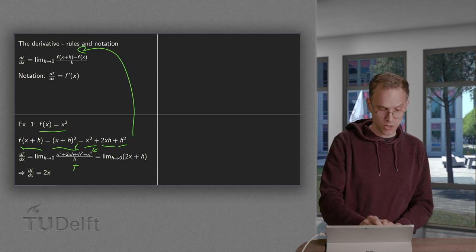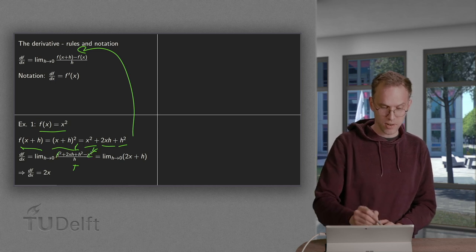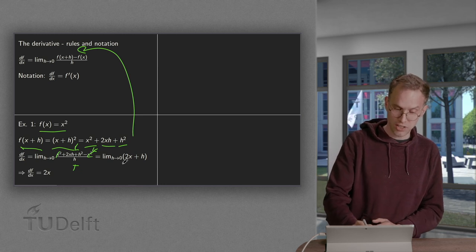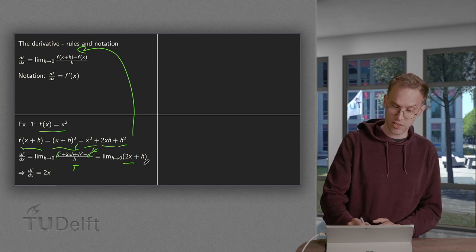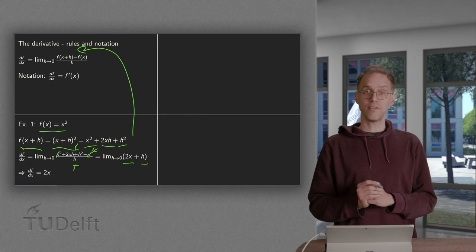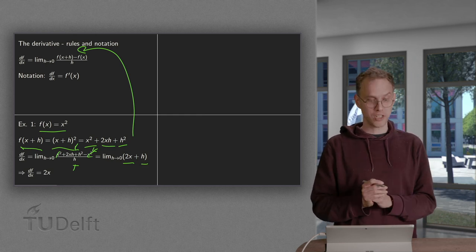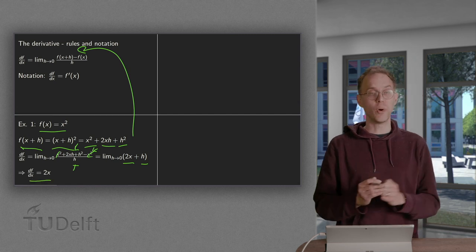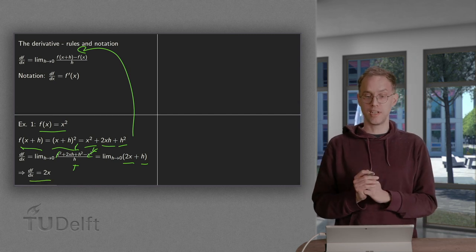And then you see that the x² terms cancel out. And the 2xh over h gives us a 2x. The h² over h gives us an h. And if we take h to 0 we get 2x. So in that case df/dx equals 2x or f' equals 2x.